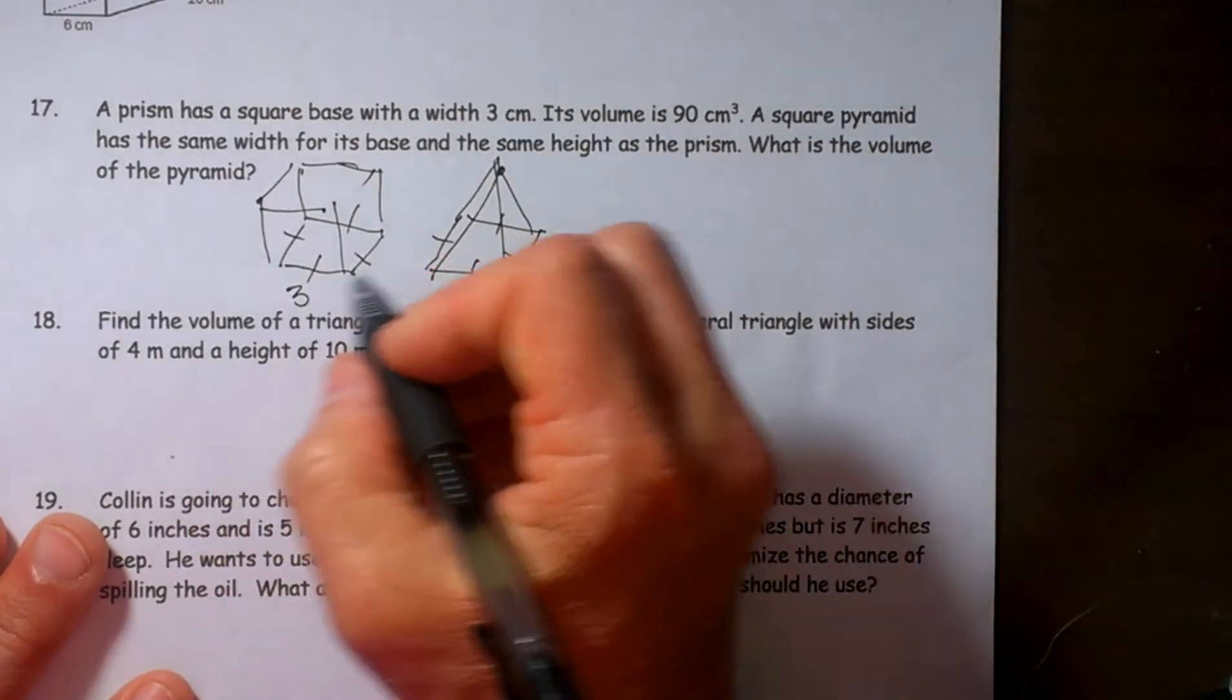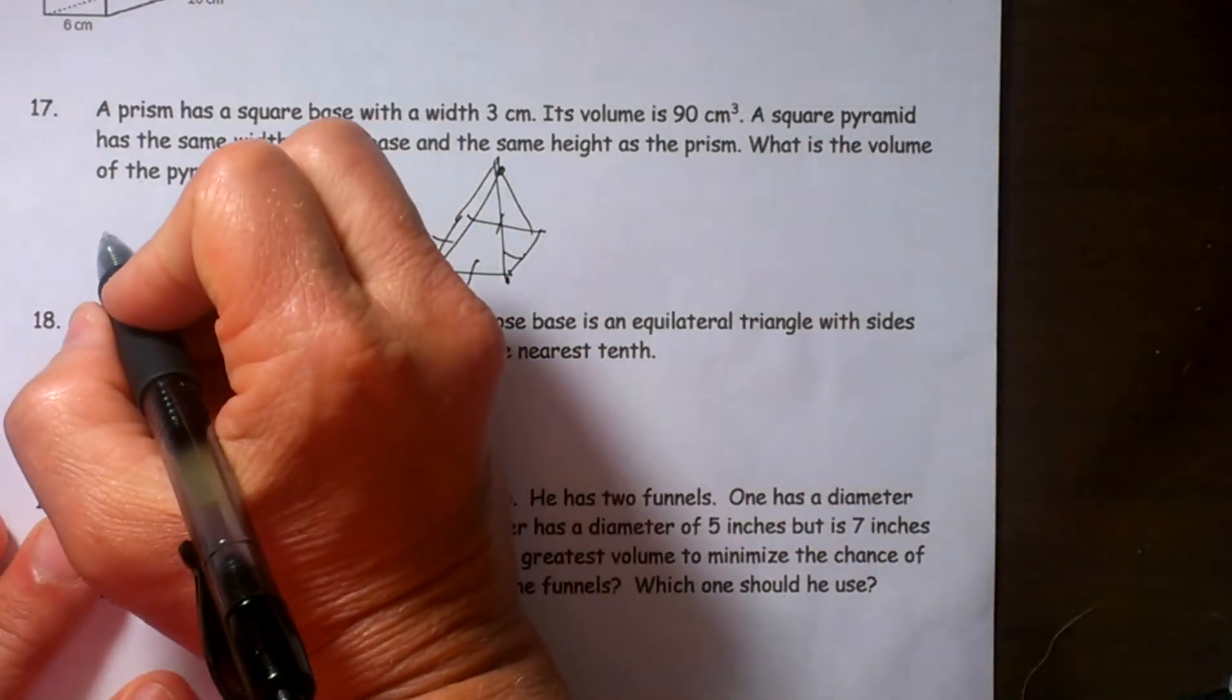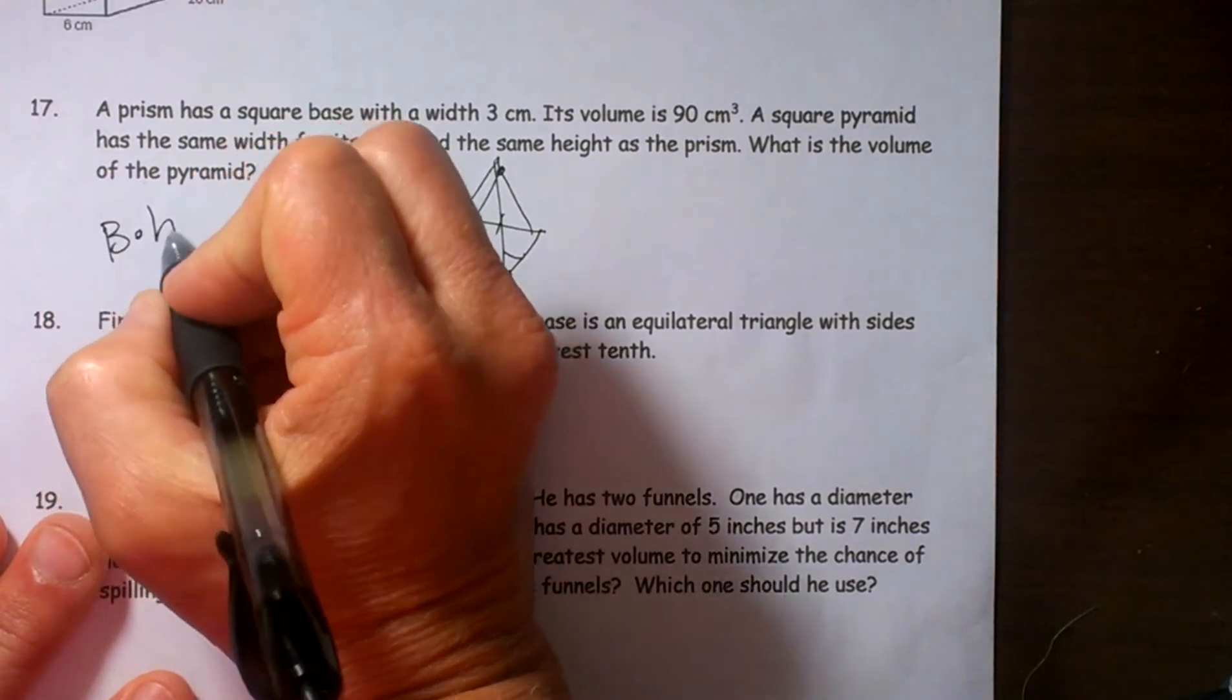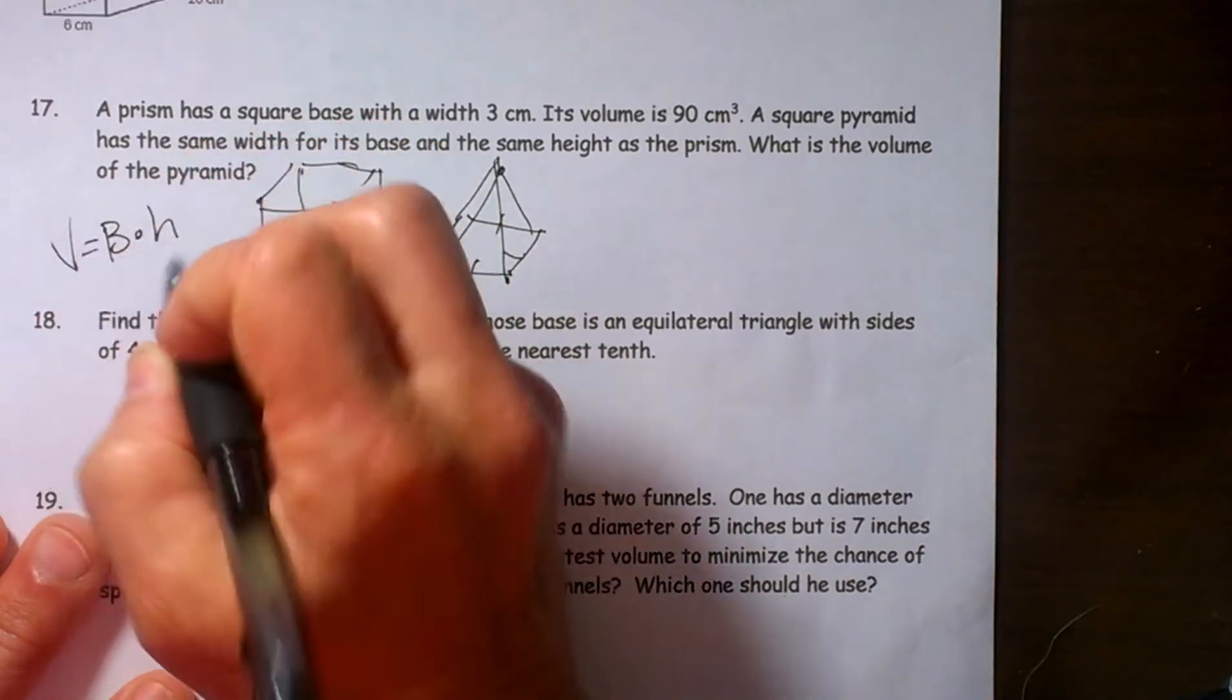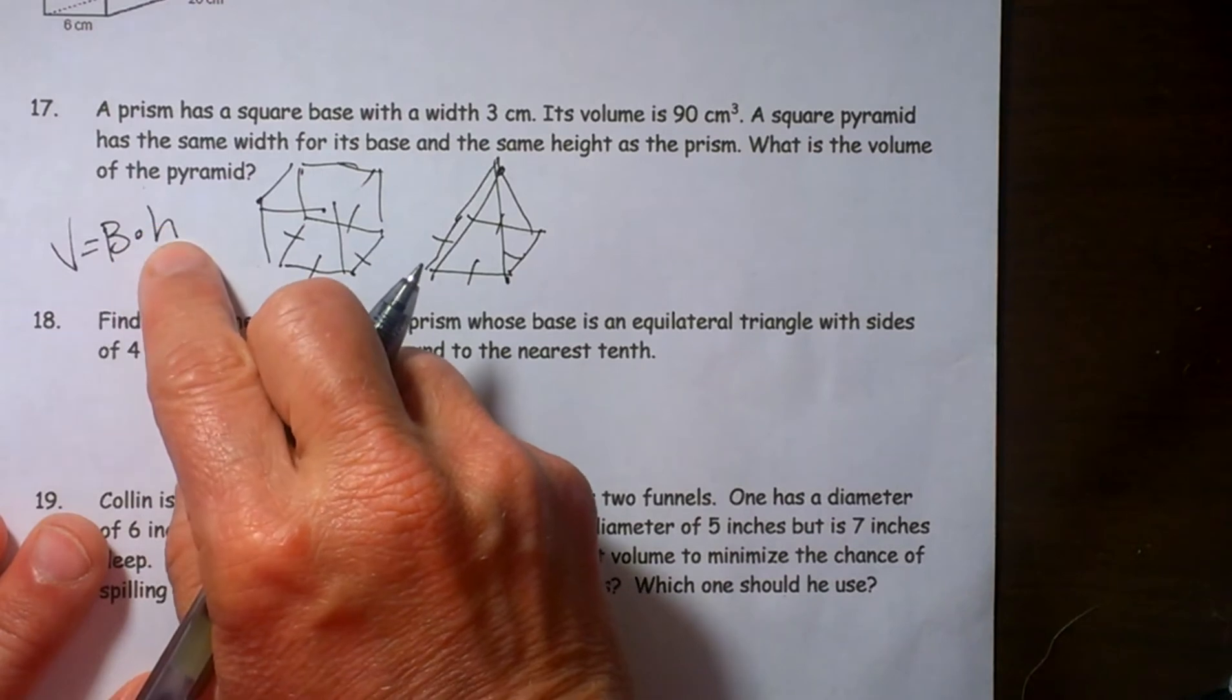Let's see. Our formula tells us that to find the volume of a prism you are going to take base area times the height.